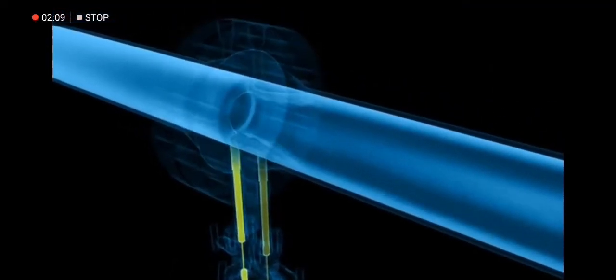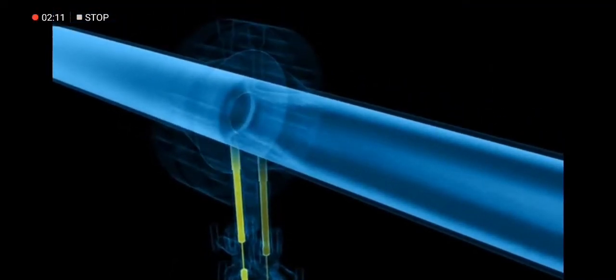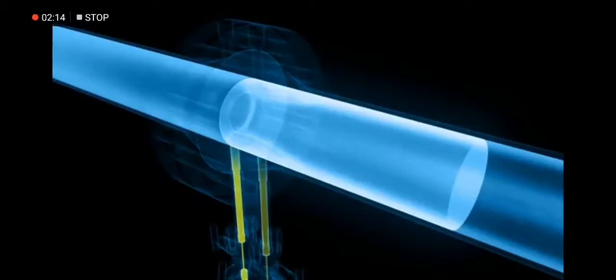This pressure difference is a direct measure for the flow velocity and thus the mass and volume flow in the pipe.